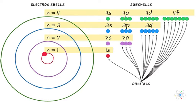The electron shell essentially represents the energy level corresponding to a principal quantum number n. Shells have different subtypes — the number of subshells equals n. The different kinds of subshells are called s, p, d, and f orbitals. Each orbital can contain at most two electrons, each with opposite electron spin.